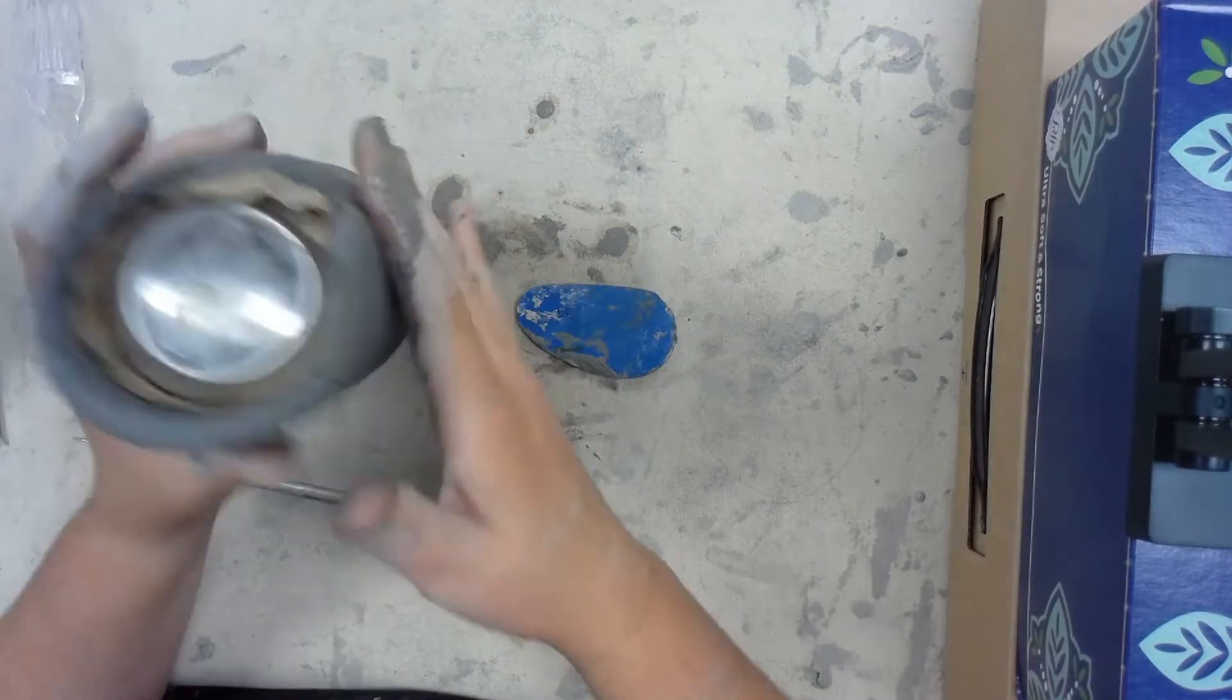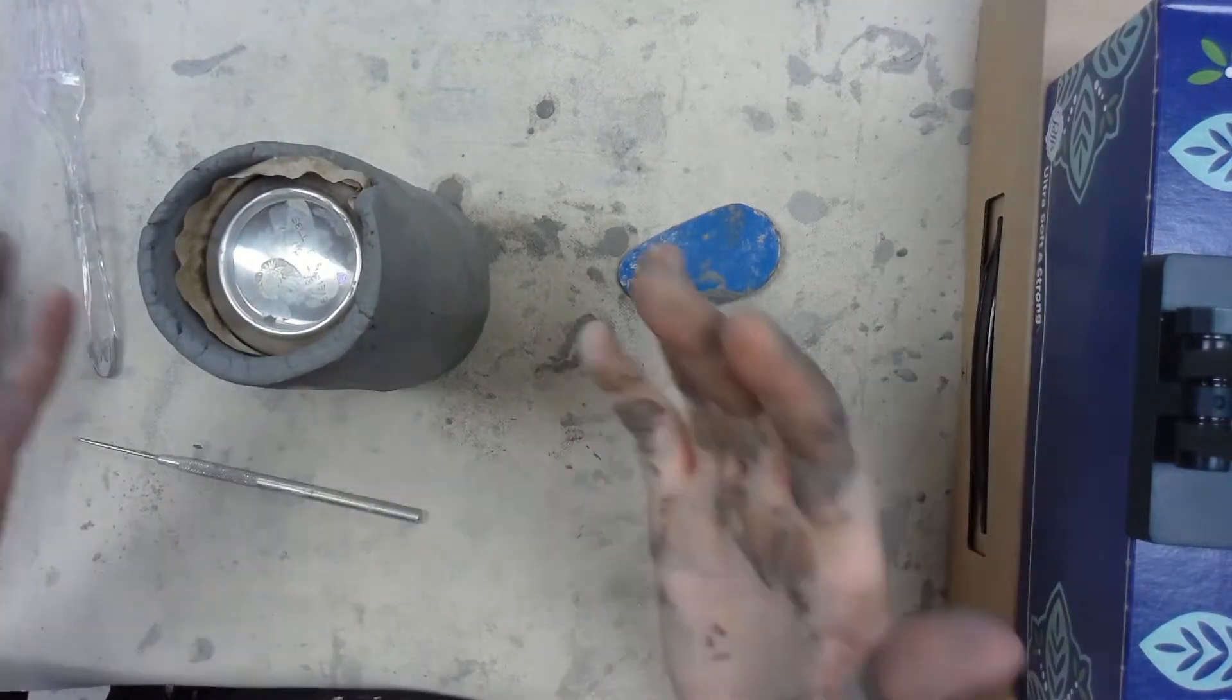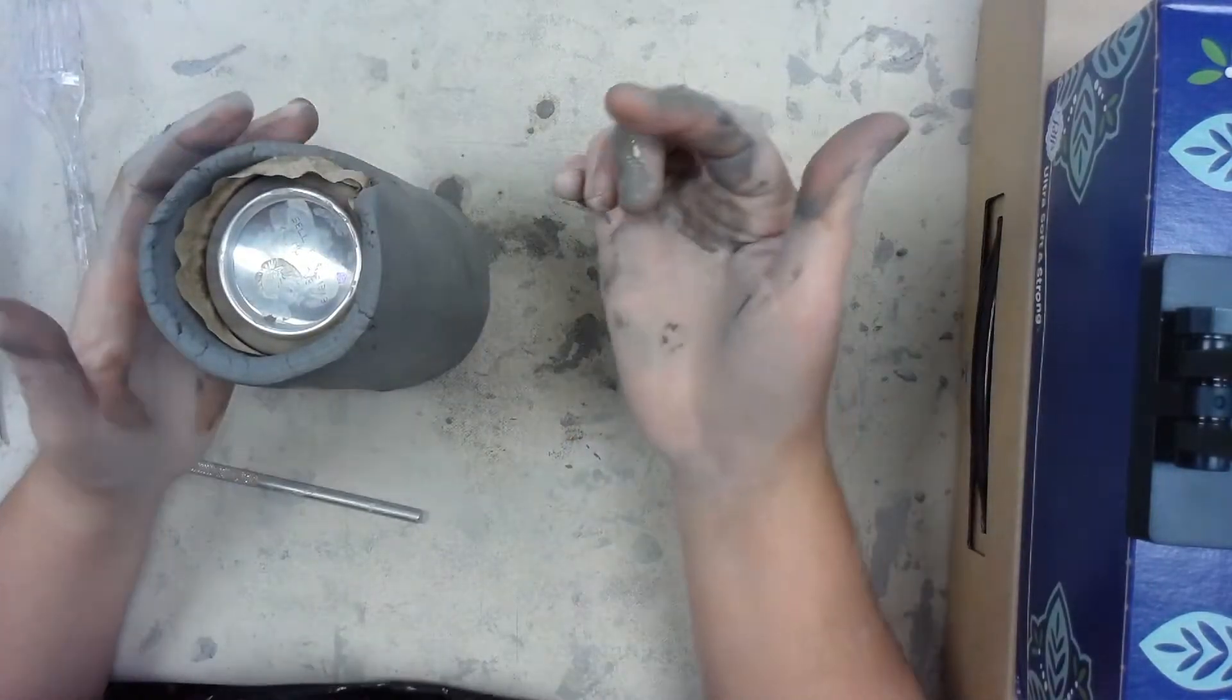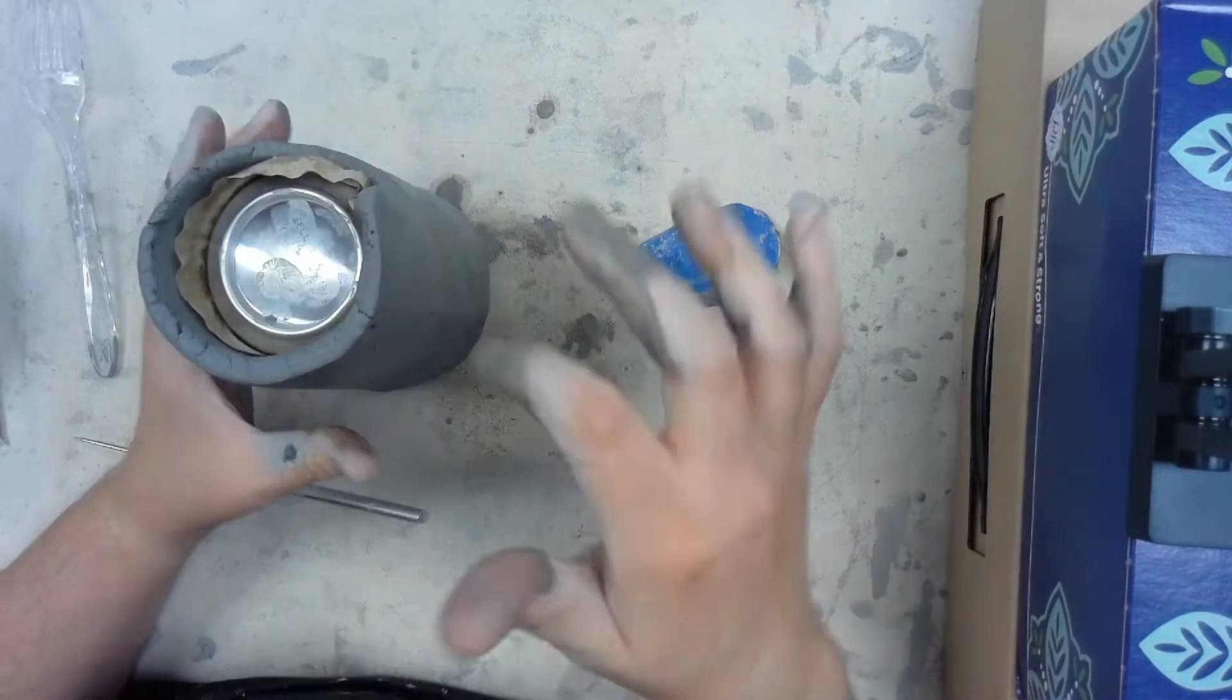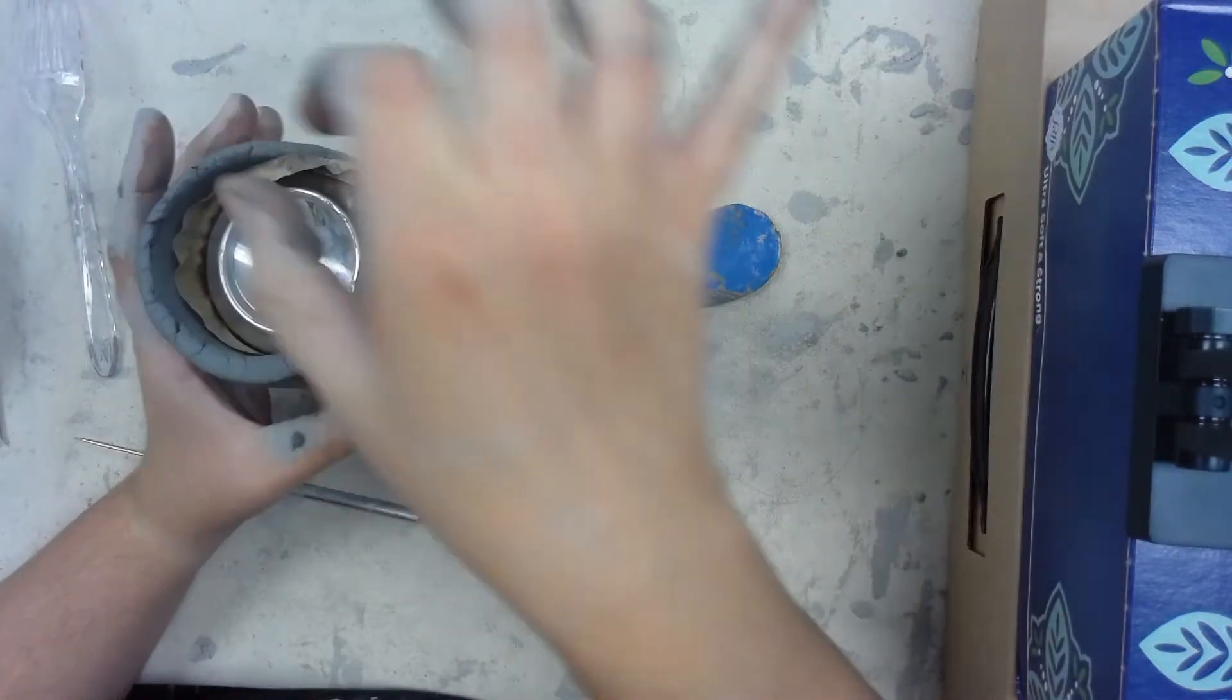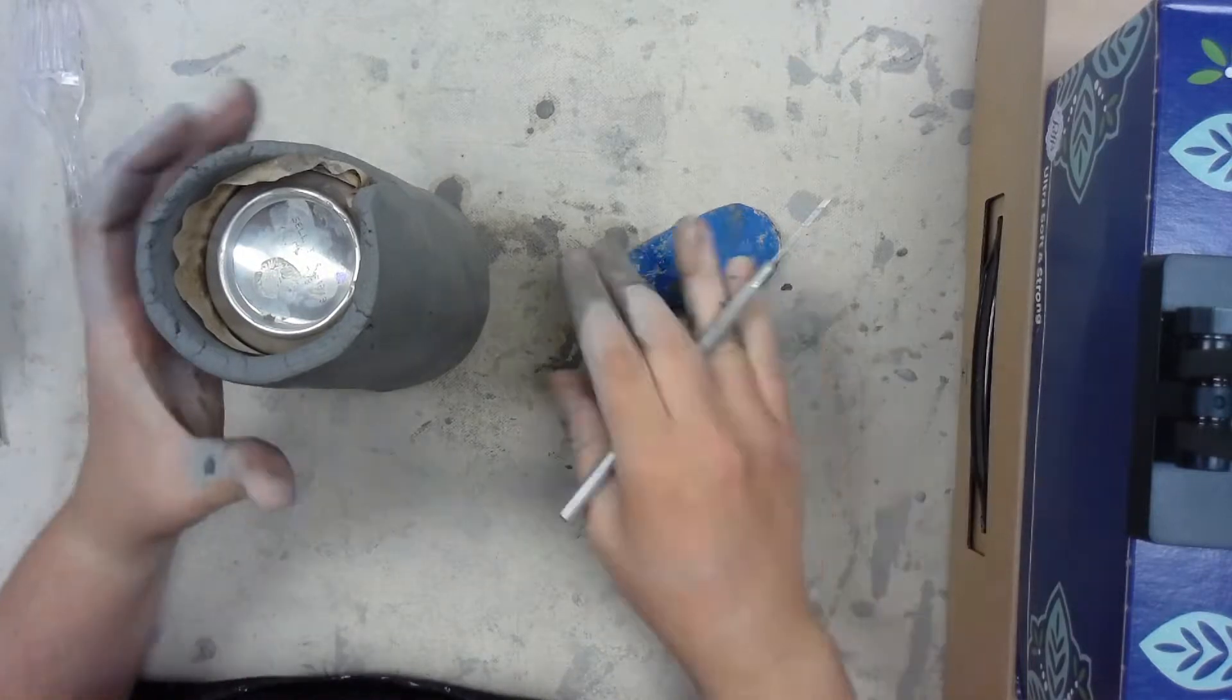Now that I have that bottom on, what you should do, which I won't be doing, is you'll stick your hand in the opening of the pop can and just pull the pop can out. My pop can, since it's upside down, what I'm going to do is I'm going to flip my clay mug over.